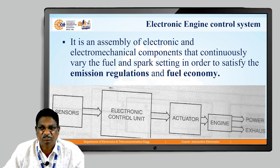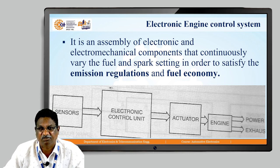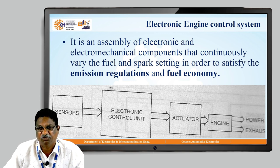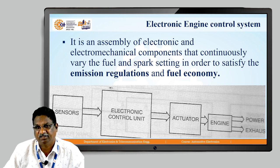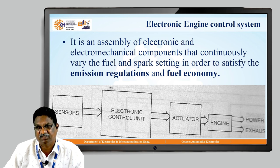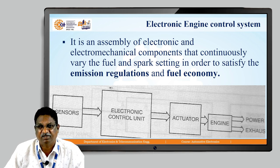If you observe the block diagram, whatever sensors are there, those sensors are connected to the ECU — that is, the electronic control unit. Then the ECU generates the output. That output is given to the actuators, and the actuators come into the picture. The generated output is given to the input of the engine, and the engine generates the power. While generating the power, it also generates exhaust emissions. This is the simple technique of controlling the engine.